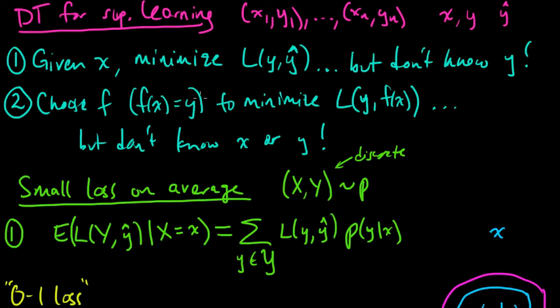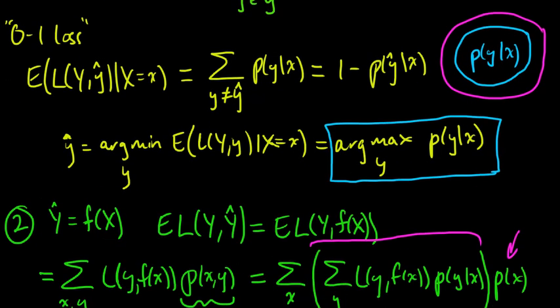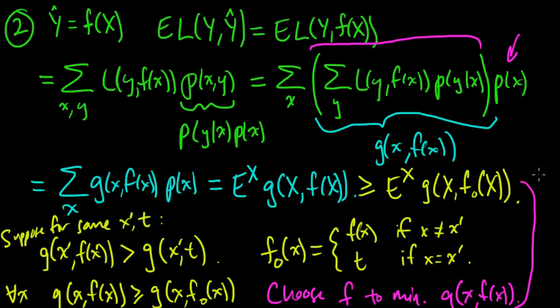We've been talking about minimizing this expected loss, so we want to get a small loss on average when we're thinking about decision theory. We have these two cases: one where we're given x, so we're minimizing the conditional expectation, and the more general case where we want to choose some f for all x's. We found that if we could solve the first problem, then we could solve the second problem, because it decoupled into just a bunch of individual cases of the first problem.